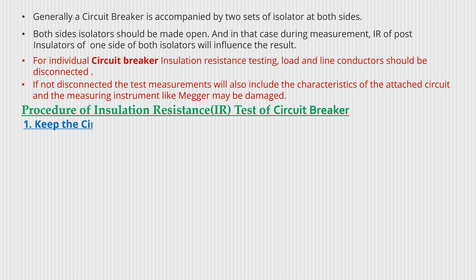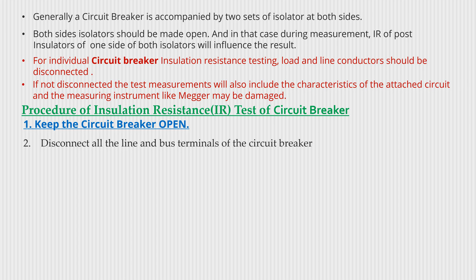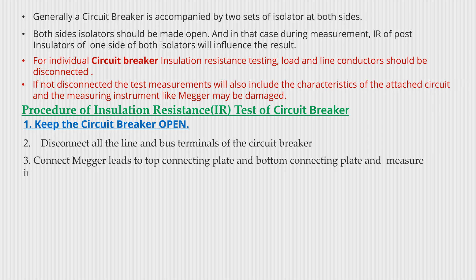Procedure of insulation resistance IR test of a circuit breaker: With the circuit breaker open, disconnect all the line and bus terminals of the circuit breaker. Connect the megger leads to the top connecting plate and bottom connecting plate and measure the insulation resistance IR value in between both plates.